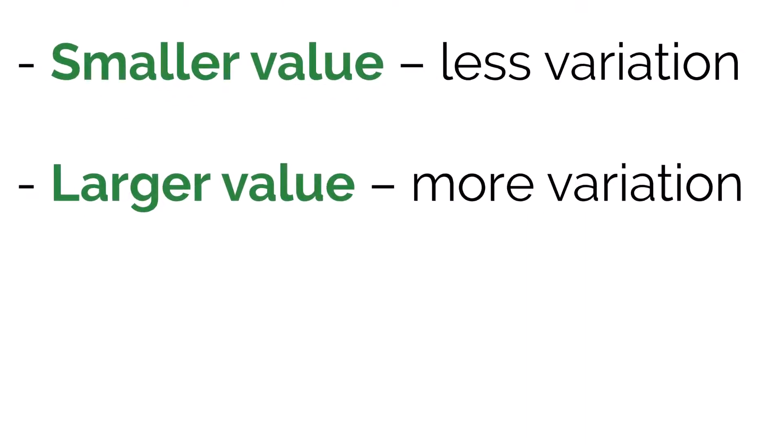So when we have a smaller value, that means there's less variation. When we have a larger value, that means we have more variation.